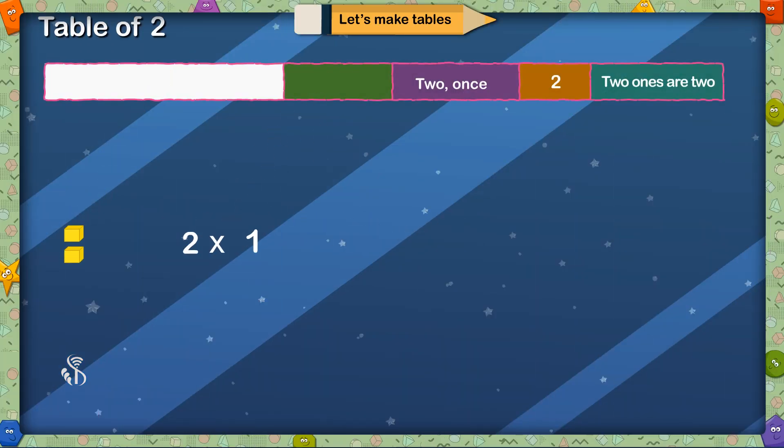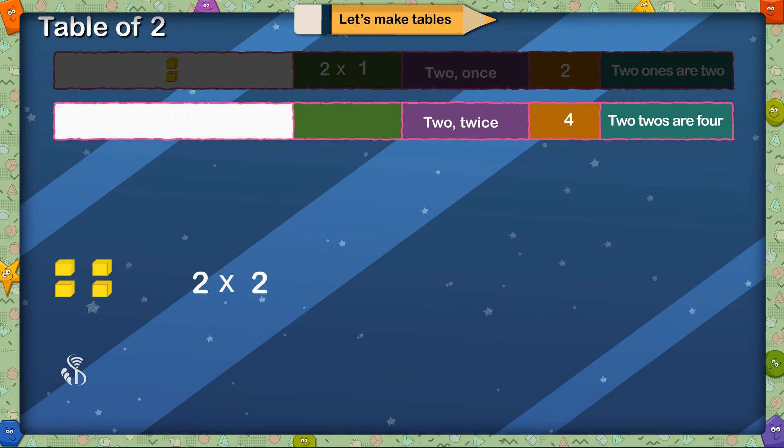Table of 2. 2 multiplied by 1, 2 1 time is 2, 2 1s are 2. 2 multiplied by 2, 2 2 times is 4, 2 2s are 4.